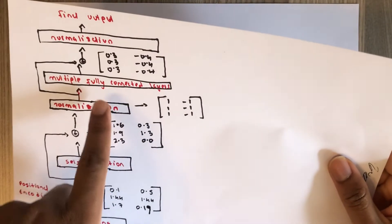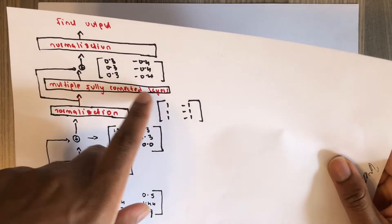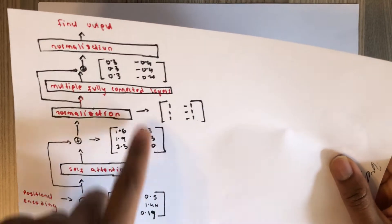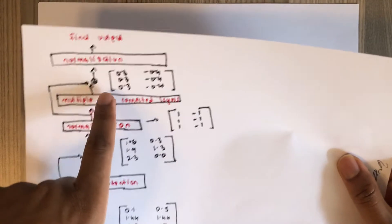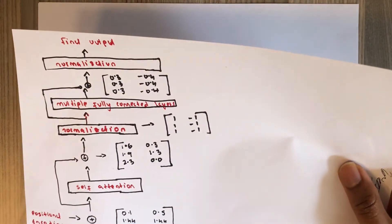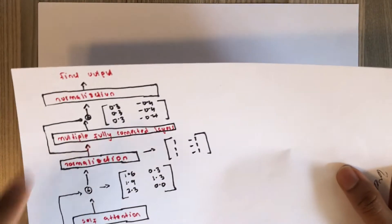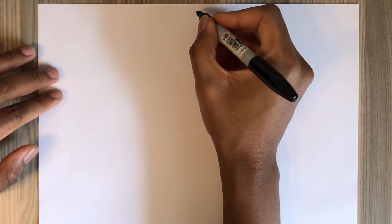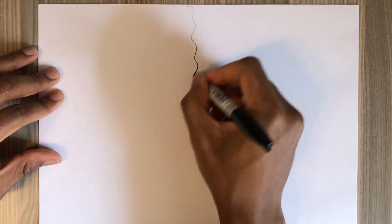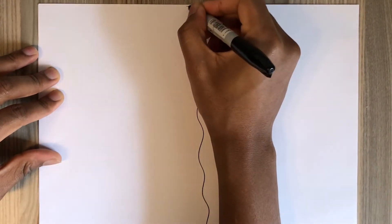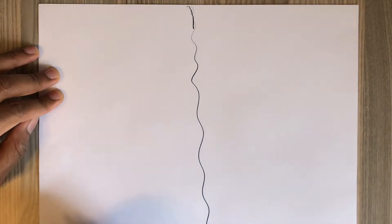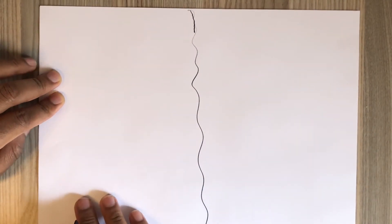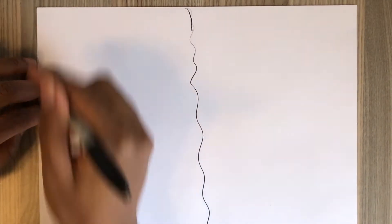Hello everyone. In the last video, we did the multiple fully connected layer step and got this result. Today we will look at the final layer of the transformer encoder, which is the normalization. The output of the fully connected layers was this.